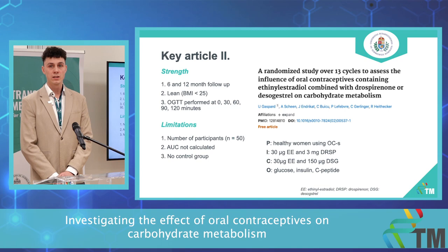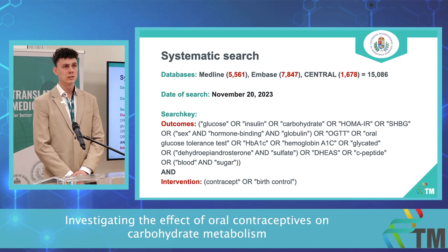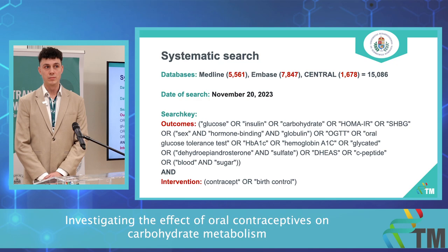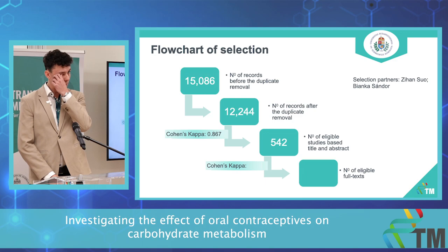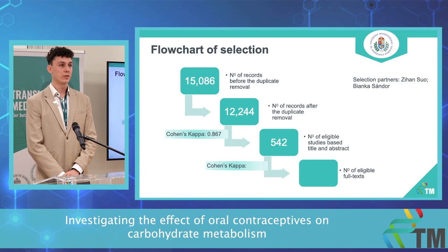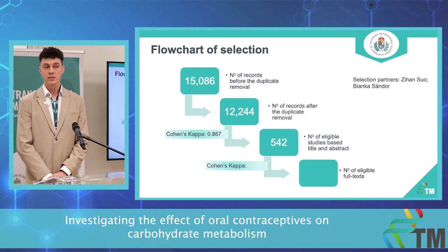A small limitation is that the number of participants was around 50, which is typical for RCTs in this area. We did our systematic search with two domains — one looking at outcomes and the other at interventions. We managed to finish the title and abstract selection: after duplicate removal we had 12,244 articles, and now we have 542 articles waiting for full-text selection, which we have started.